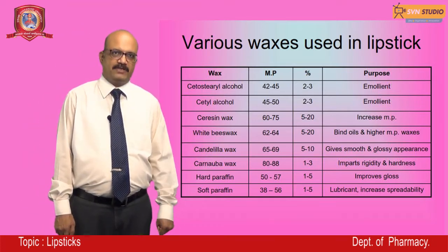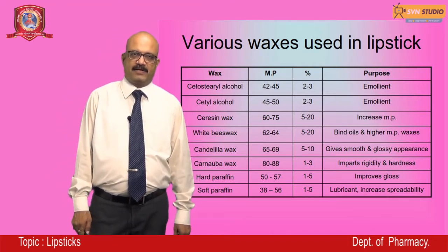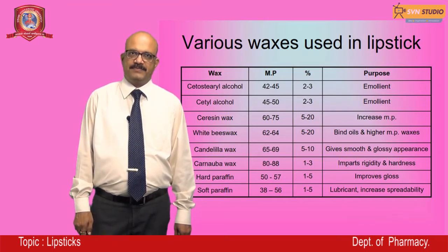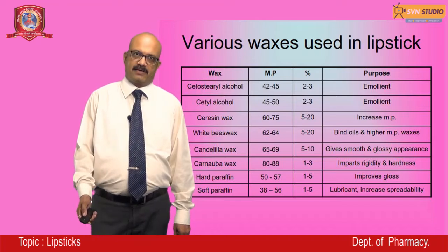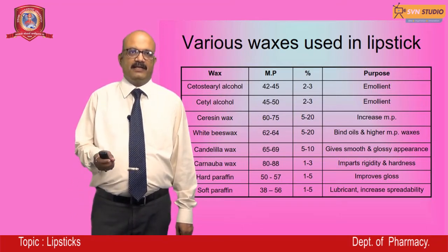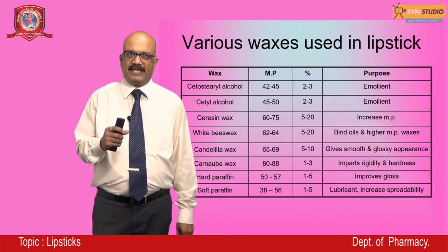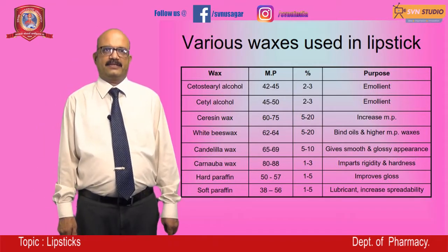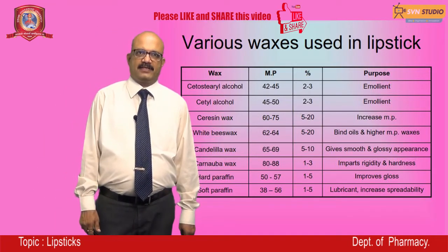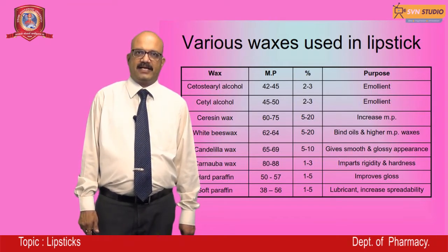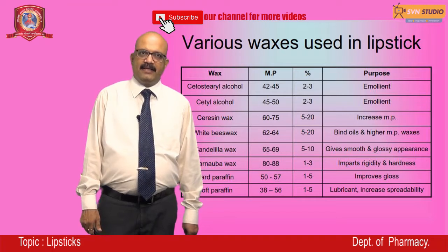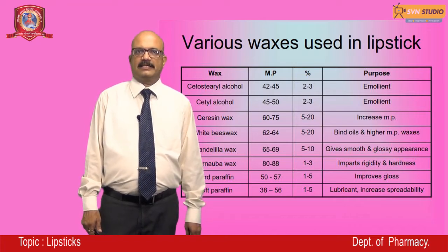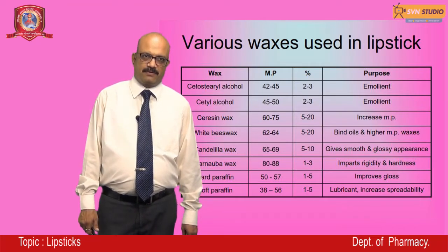The various purposes of using these waxes: ceresin wax is used as an emollient and to retain water at the applied part, and to increase the melting point. White beeswax is used for binding oils and higher melting point waxes. Candelilla wax is used to give a smooth and glossy appearance. Other waxes impart rigidity and hardness, improve glossiness, and act as lubricants to increase spreadability.